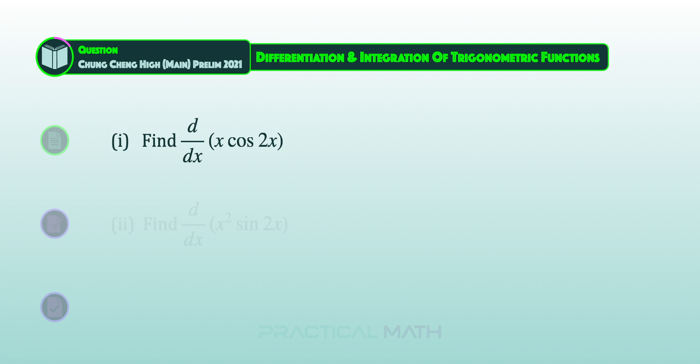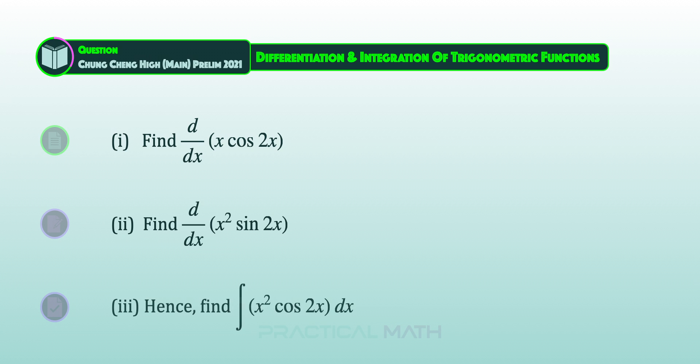In the next part, find the derivative of x squared sine 2x with respect to x. And in the last part of the question, integrate x squared cosine 2x with respect to x. This question is from Chongqinghai Main Preliminary Examination 2021 for GC O-Level Additional Math.